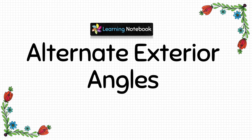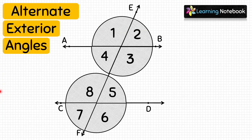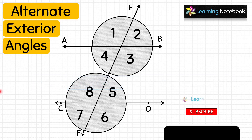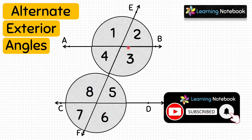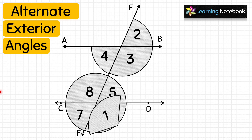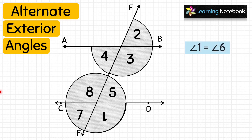The next topic is alternate exterior angles. The third aim of this project is to prove that pairs of alternate exterior angles are equal — that is, angle 1 equals angle 6 and angle 2 equals angle 7. Let's make another set of these 8 angles. Place the cutout of angle 1 on angle 6 — we see that angle 1 completely covers angle 6, so the first pair of alternate exterior angles are equal.